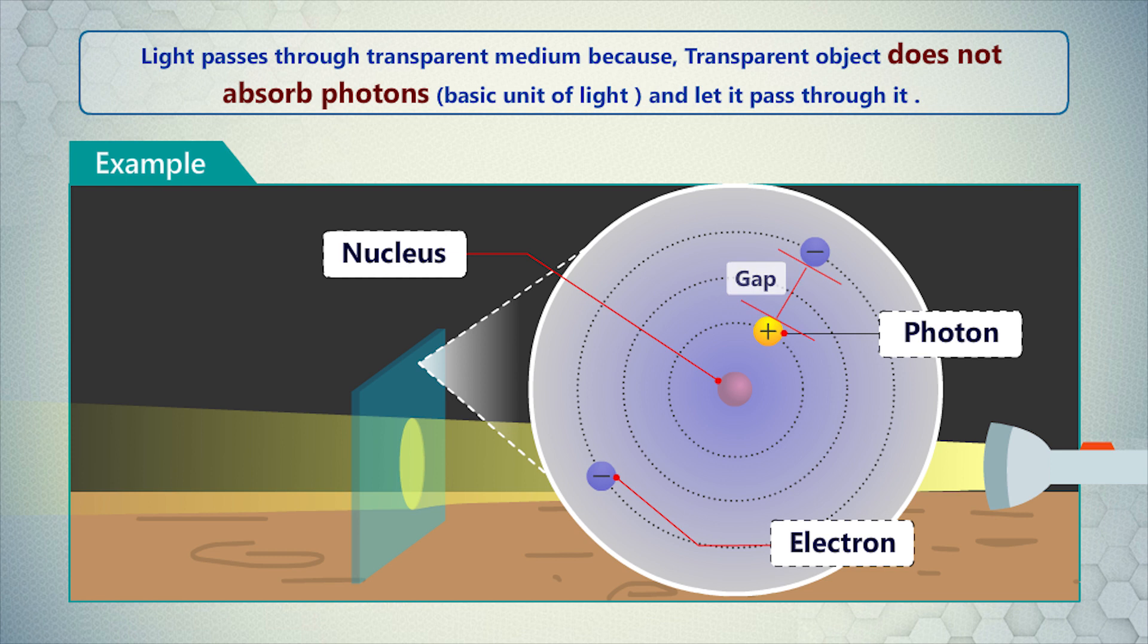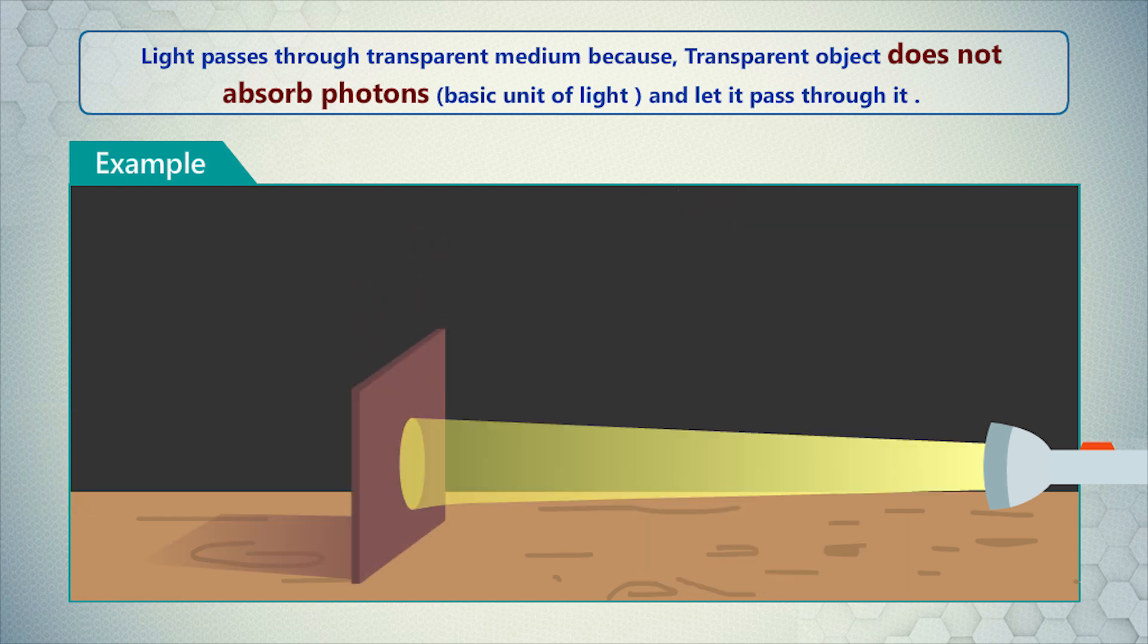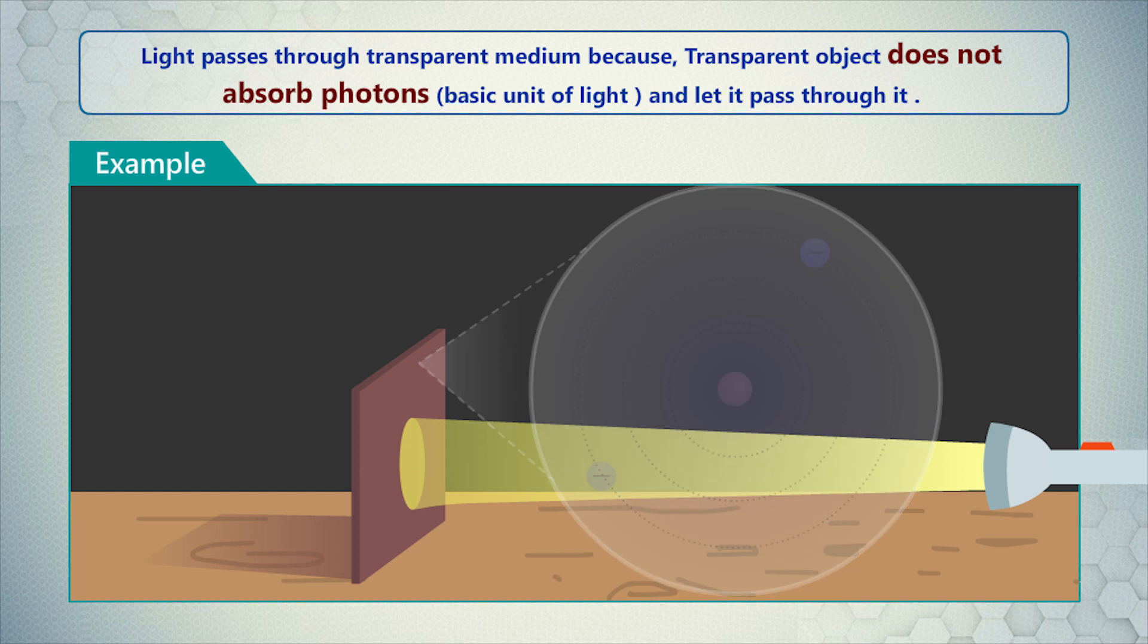If you replace this transparent glass and take a wooden board, you will see that light is not passing through it. Because in opaque objects, the gaps between orbits of electrons are not big enough to allow photons, and thus, the electrons absorb the photon. As a result, we cannot see through them. We see only the surface of the substance.